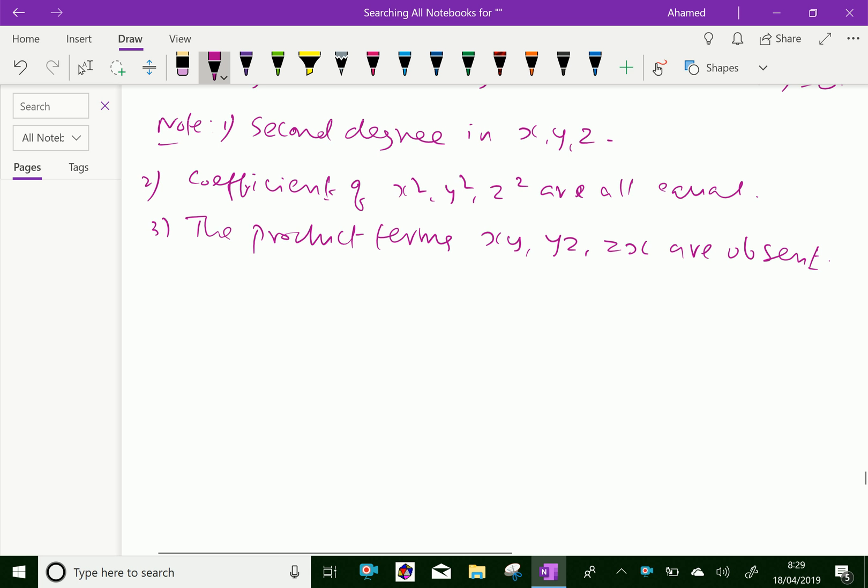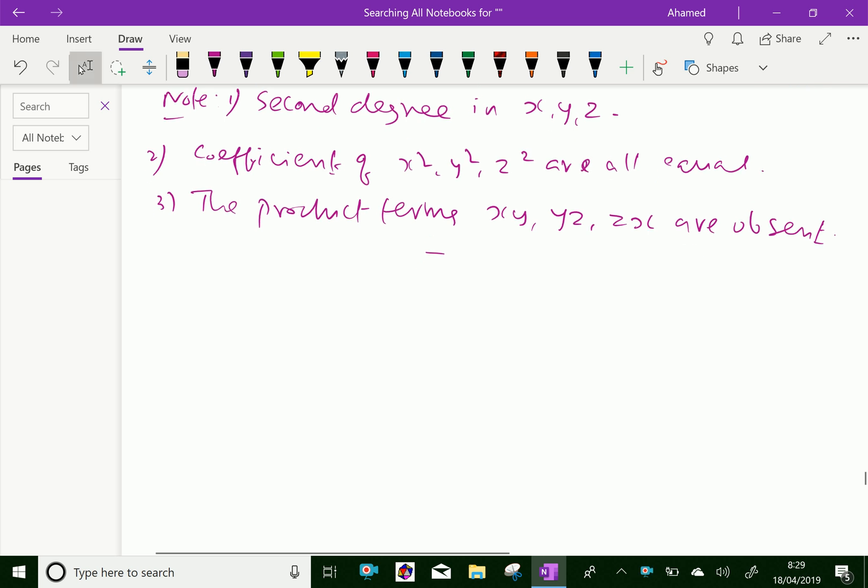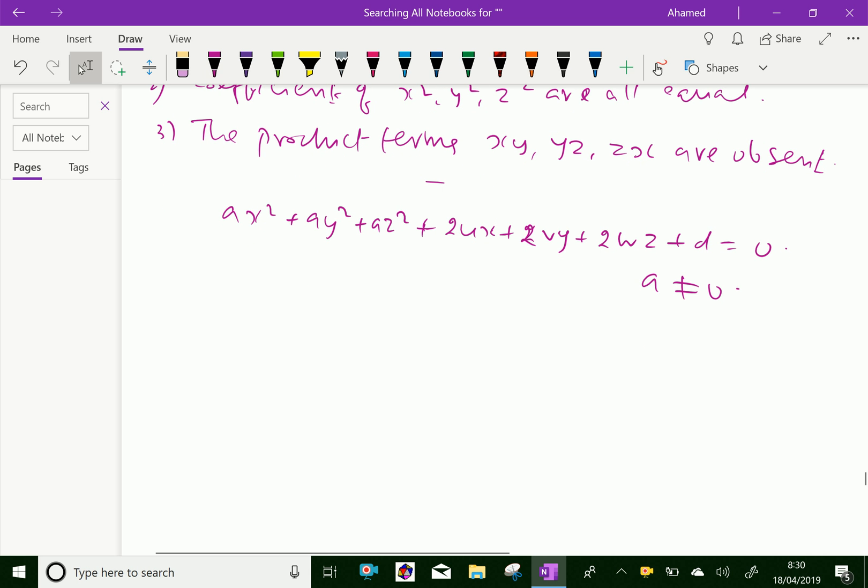Now we can write, suppose that equation having x square term, y square term, z square term have some constants. We can write the equation as a x square plus a y square plus a z square plus 2 u x plus 2 v y plus 2 w z plus d equal to 0, where a is not equal to 0. This also represents an equation of sphere having coefficients of x, y, z terms are u, v, w.